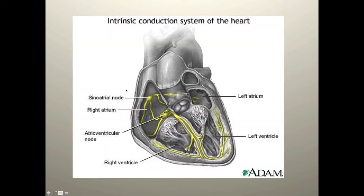Each and every time we name something a sinus rhythm, that's because we've identified that it's coming from the SA node — the main primary pacemaker of the heart. The SA node is located in the top right rear corner of the right atrium, and it produces a very characteristic marking on the EKG: an upright P wave followed by a QRS complex. Anytime we see that marking, we'll call it a sinus rhythm.